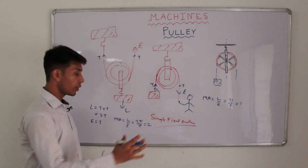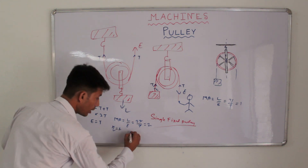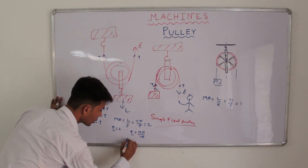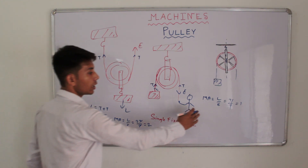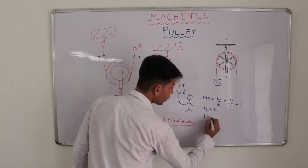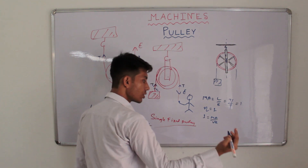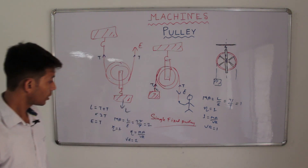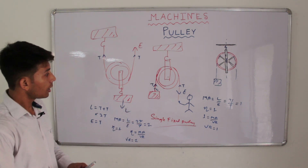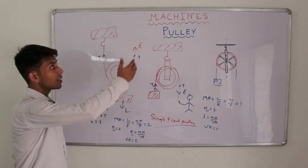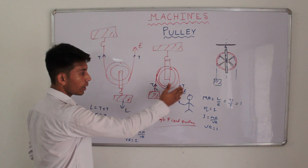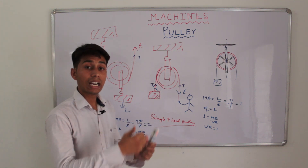Now keeping an ideal case we know efficiency equals 1, and we know efficiency equals mechanical advantage by velocity ratio. So in the case of the single fixed pulley, we have velocity ratio equal to 1, and mechanical advantage equal to 1. For the movable pulley, if we take efficiency equal to 1, then mechanical advantage divided by velocity ratio equals 1, giving velocity ratio equal to 2. However, in the movable pulley case the effort is being applied in the upward direction — that is against gravity — so we are not able to utilize our full weight. In the fixed pulley case we were applying the effort downward, so we were able to utilize our own weight also.